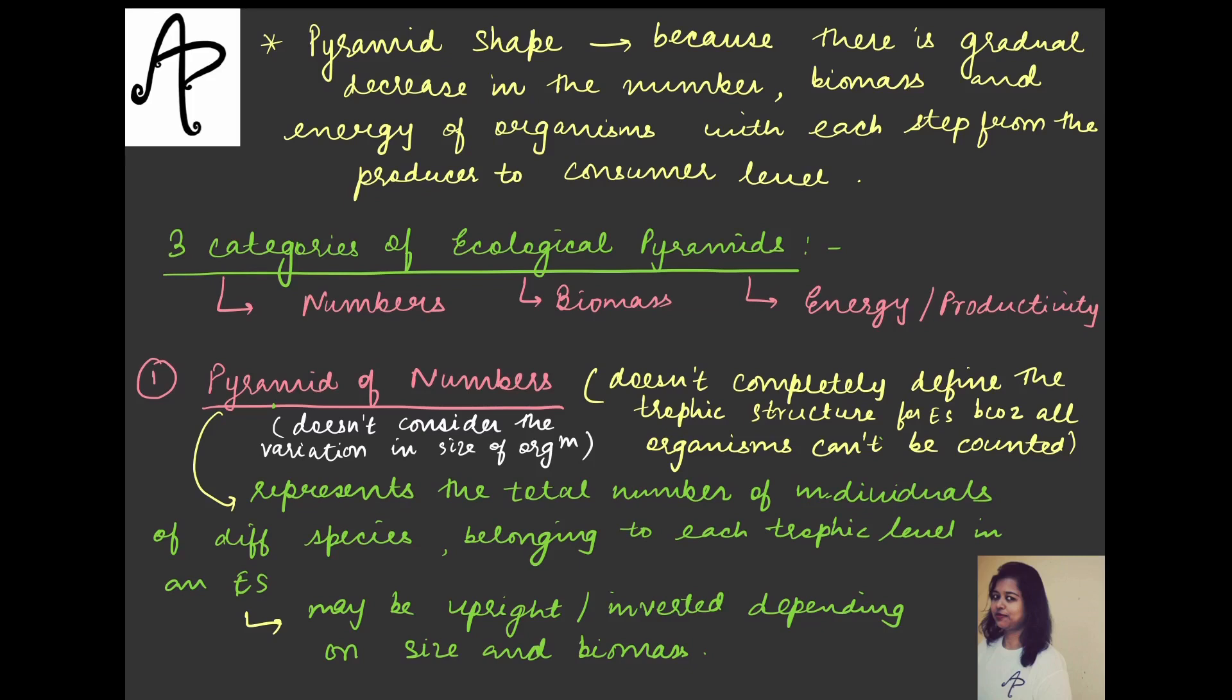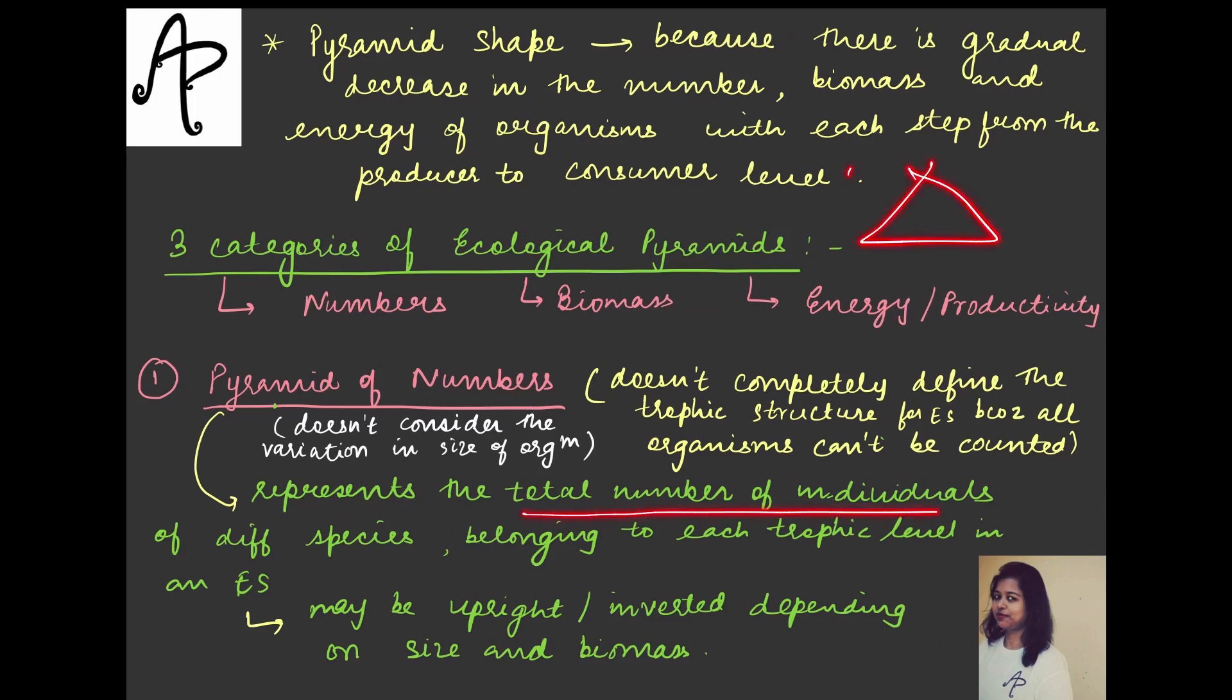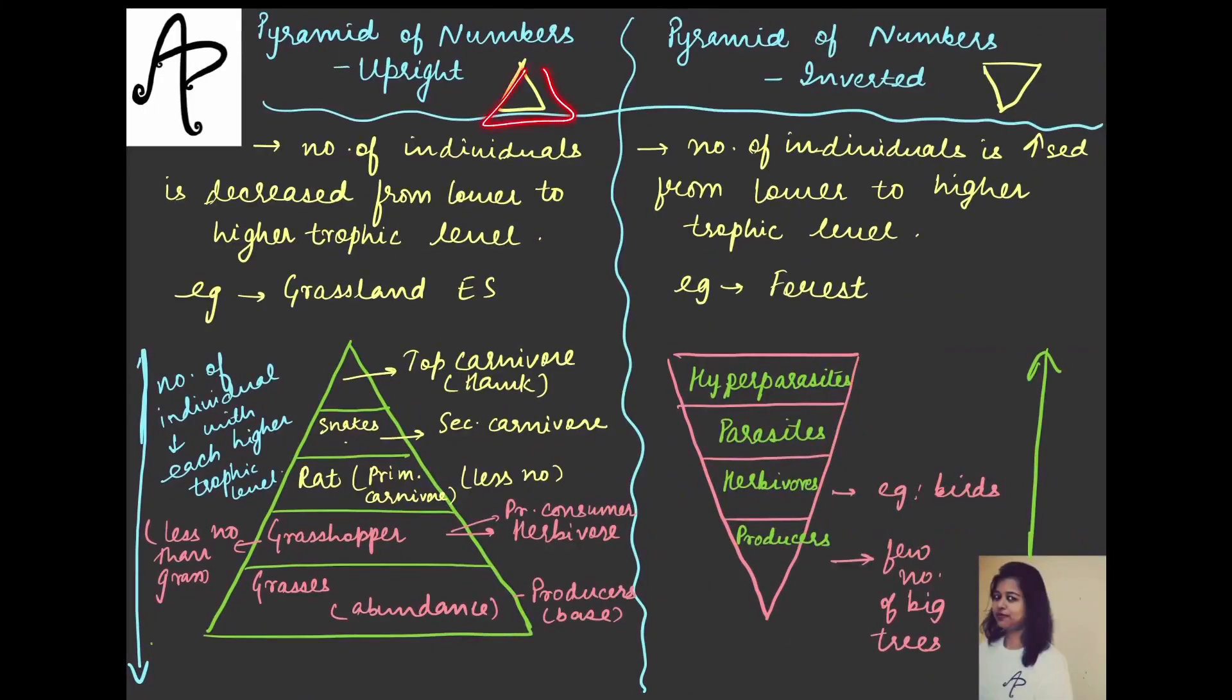So the pyramid of numbers we have already seen wherein we just talked about how this pyramid represents the total number of individuals of the different species. And then we have also seen that it can be upright, it can be spindle shaped and it can be inverted also. With each successive trophic level, the number of individuals is decreasing. But if it is inverted, in the base there will be few number of individuals and then with the successive trophic level, the number will increase.